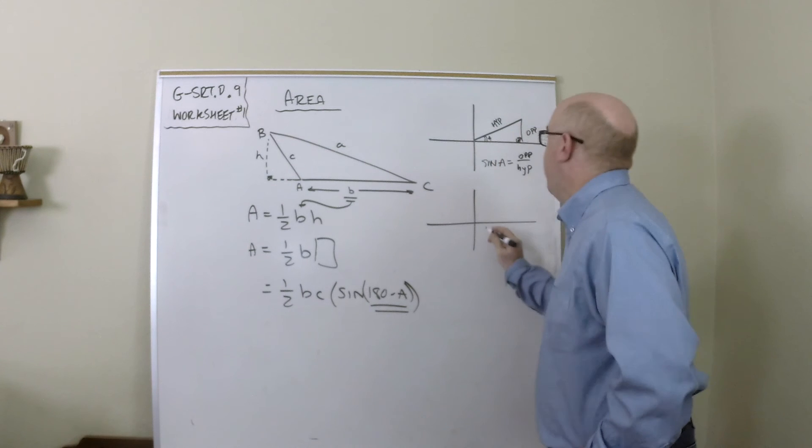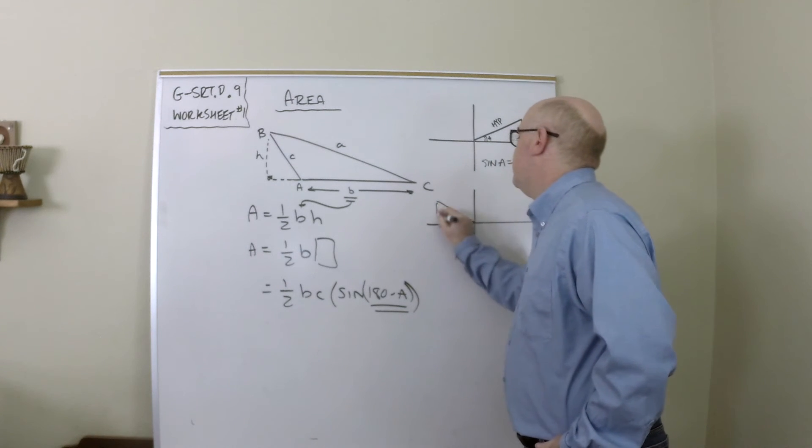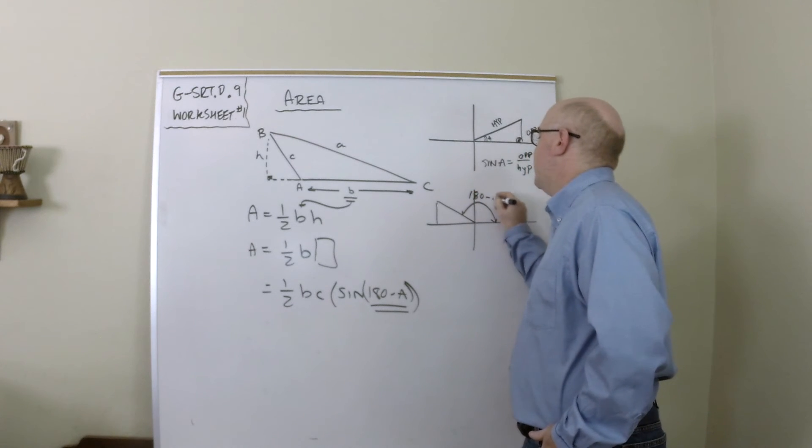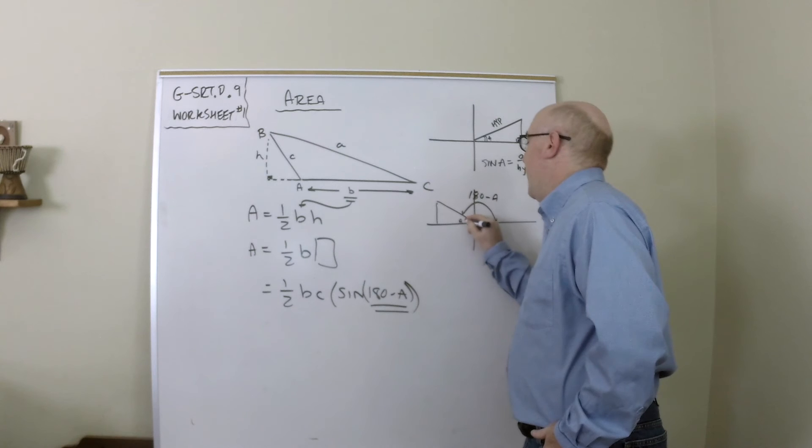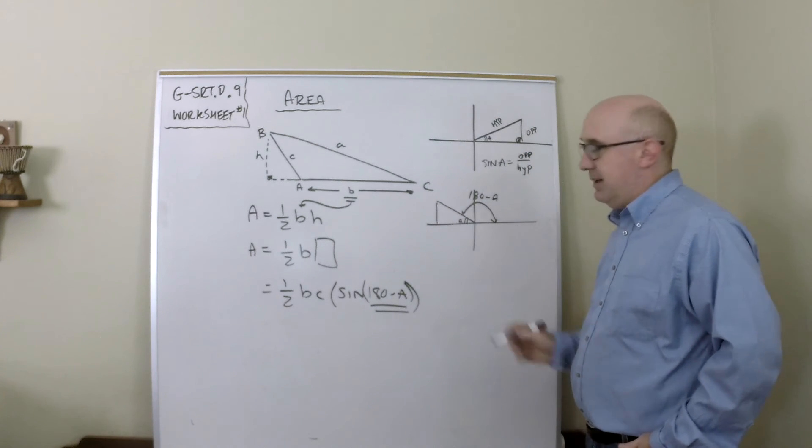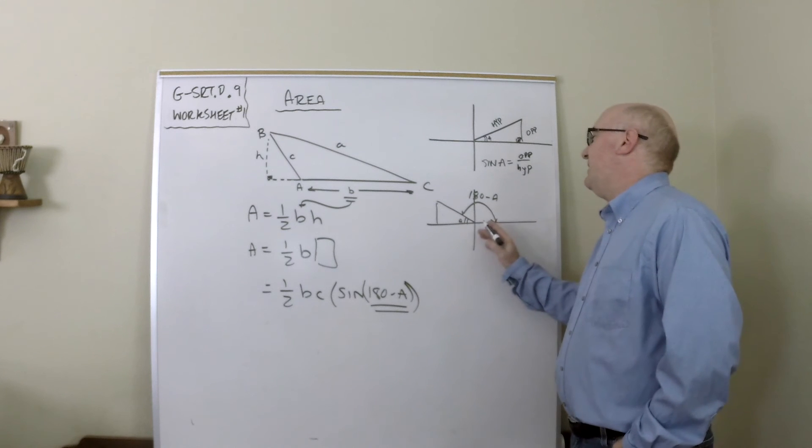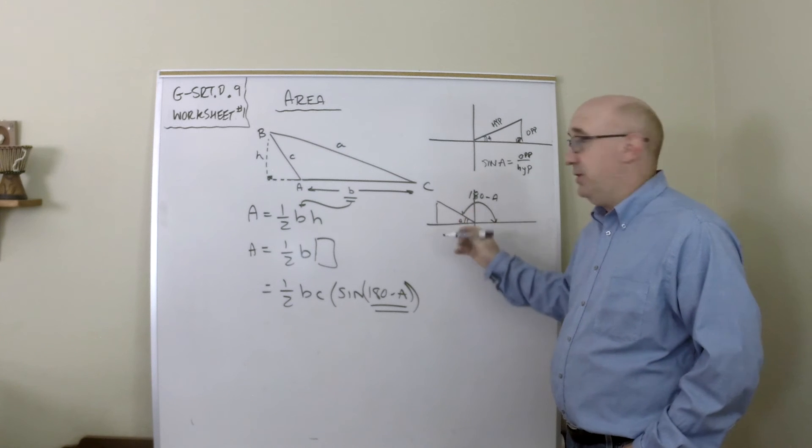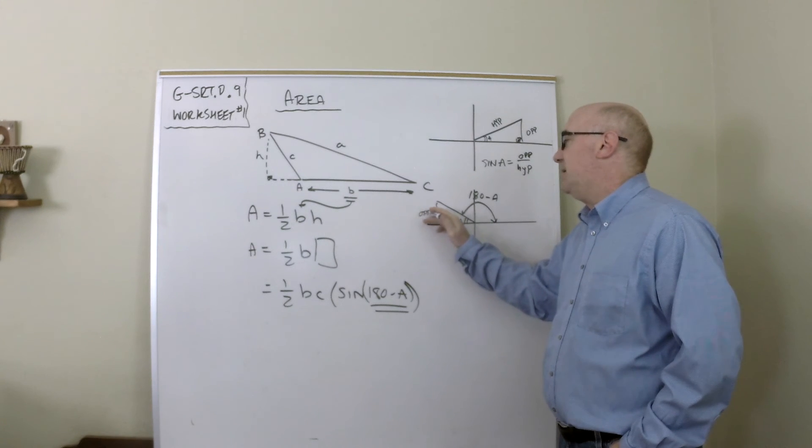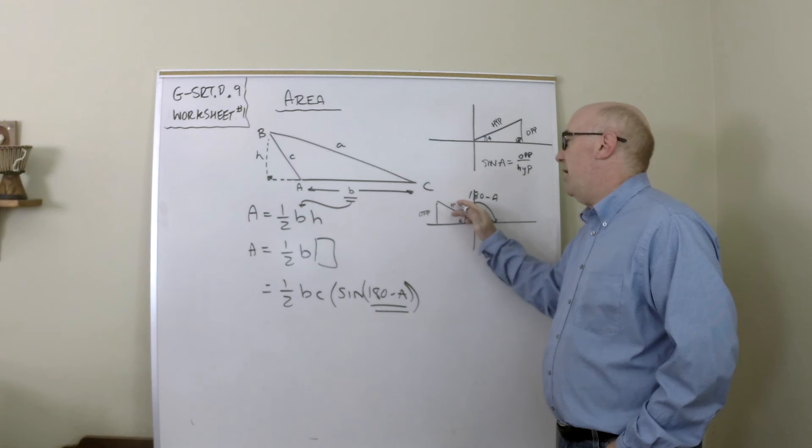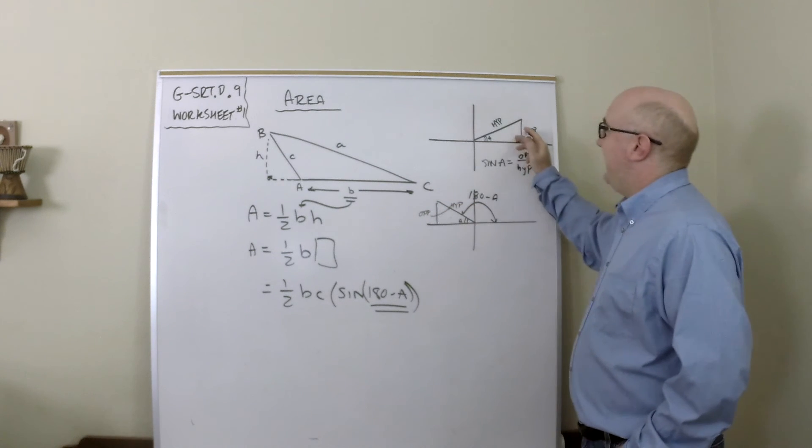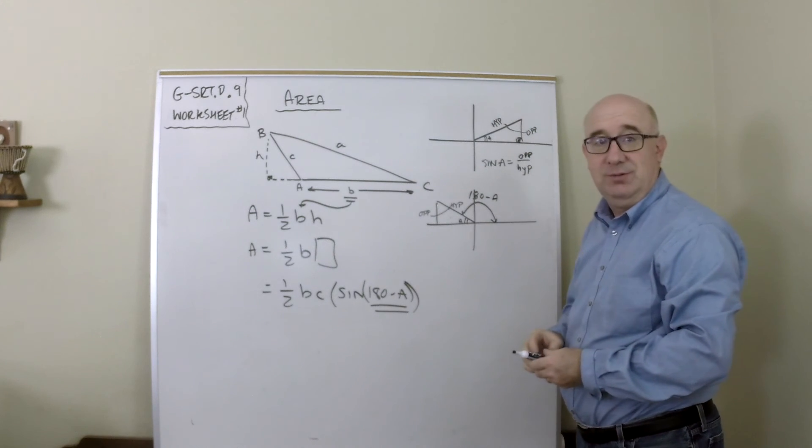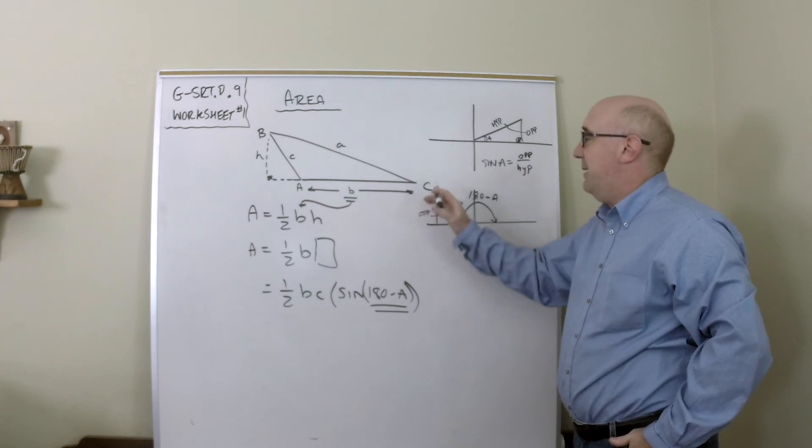So 180 minus A would be over here. 180 minus A would be over here. 180 minus the angle of A would be this size, but what happens is it creates the identical triangle in quadrant 2. And when you compare the opposite to the hypotenuse in this group, you get the exact same triangle, but over in quadrant 2. And so you would get the exact same opposite.